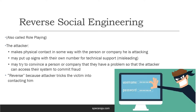Reverse social engineering is also called role playing. Here the attacker makes physical contact with the person or company they're attacking, but doesn't come across as an attacker. They might put up signs in the company with their own number as if they were technical support, so you contact them when you need help. Or they convince the company they have a problem, get access to repair it, and then commit fraud. It's called reverse social engineering because the attacker gets the victim to contact them, not the other way around.